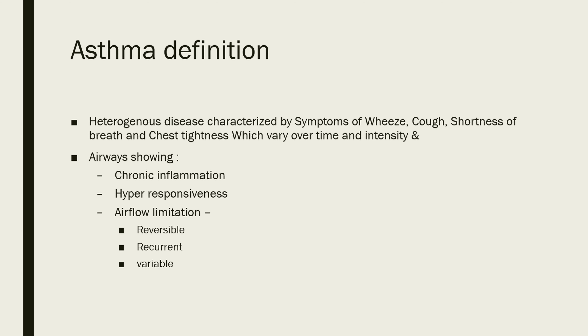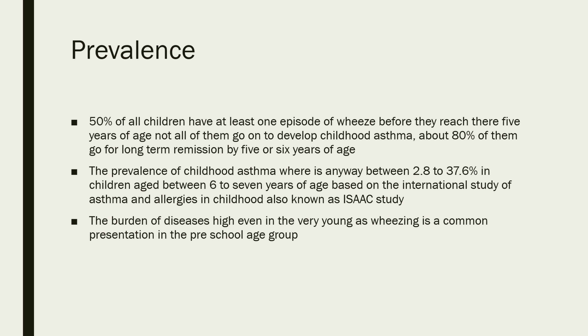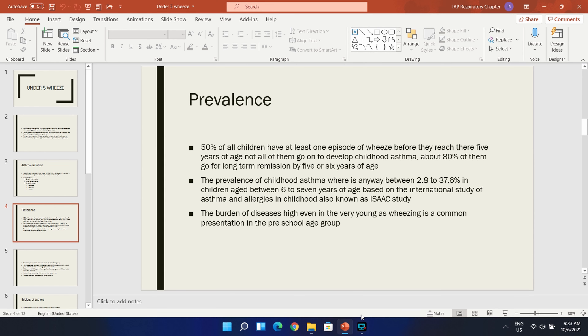By definition, asthma is a heterogeneous disease characterized by symptoms of wheeze, cough, shortness of breath, and chest tightness that vary over time and intensity, with airways showing chronic inflammation, hyper responsiveness, and airflow limitation — which can be reversible, recurrent, or variable.